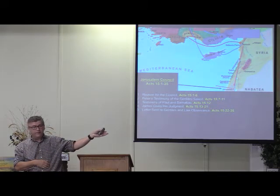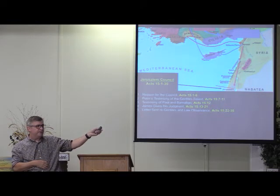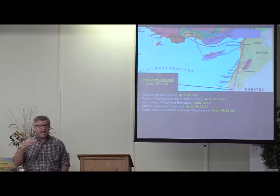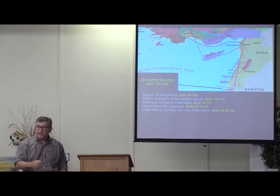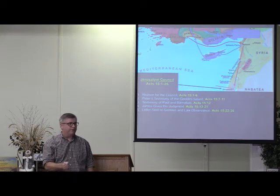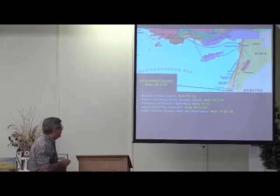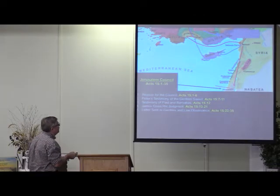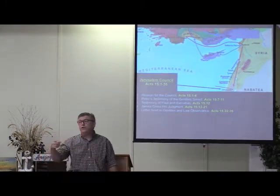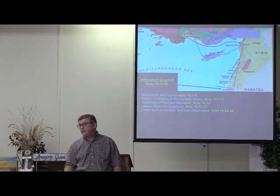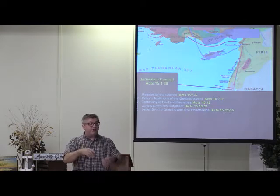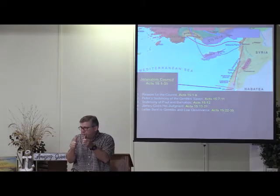Why were there poor saints in Jerusalem? Because they had sold everything they had while waiting for the kingdom, and now it's been interrupted. By Acts 15 and Galatians 2, they understood the program has changed and Paul is the apostle. Paul goes back to Antioch at the end of Acts 15, and they send some people with him from the elders there - one of whom we later find becomes an apostle: Silas, also called Silvanus. He comes back to confirm: Jerusalem is in agreement with this.